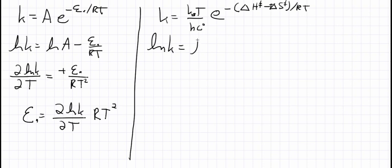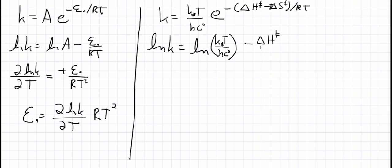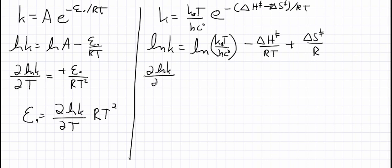The log of k is equal to the log of kT over hC, plus the log of the exponential, which is just minus delta H double dagger over RT. Distributing the minus sign gives a positive delta S double dagger over R, because the factors of T cancel. Now let's take the derivative of this expression with respect to temperature.